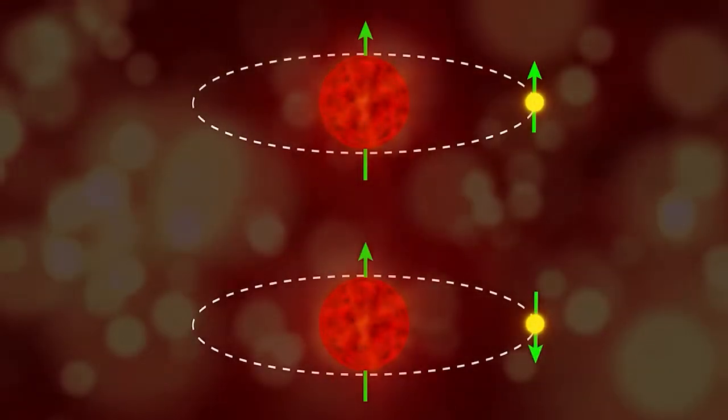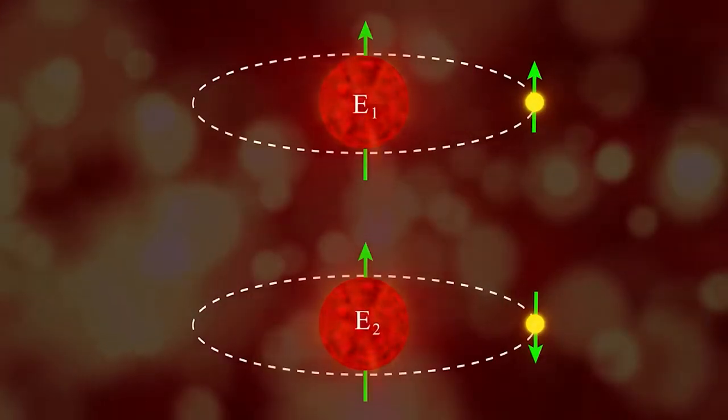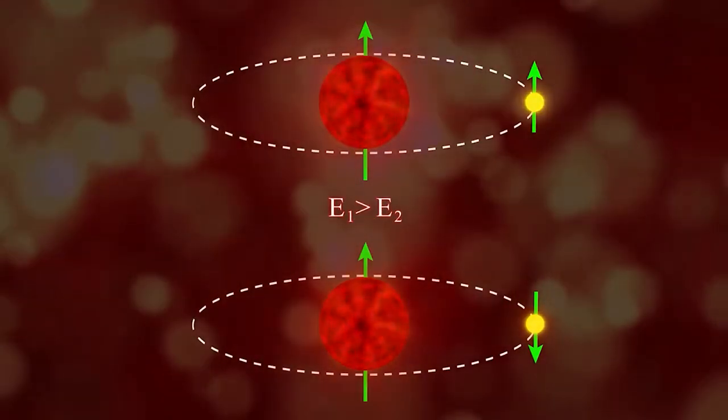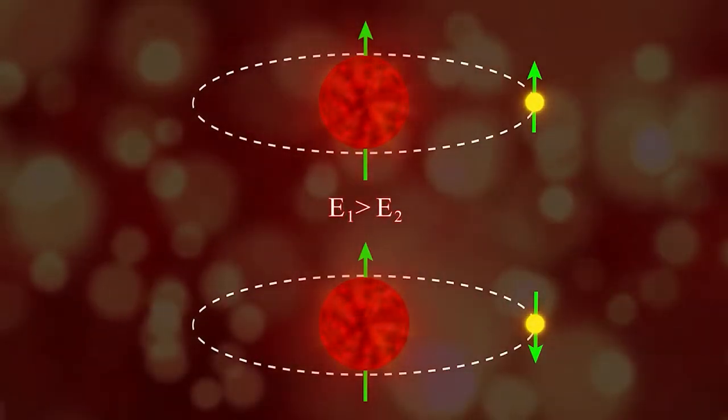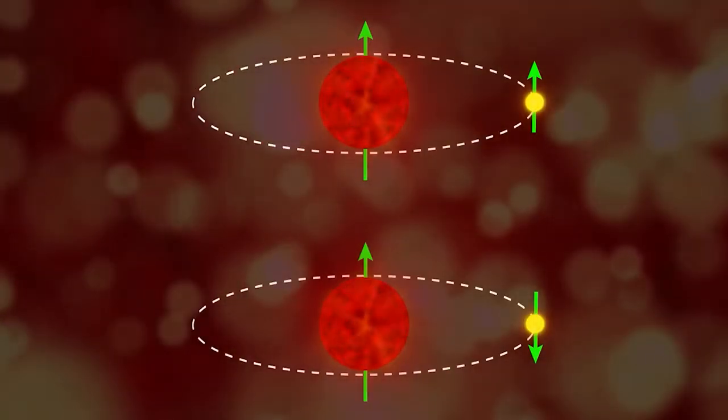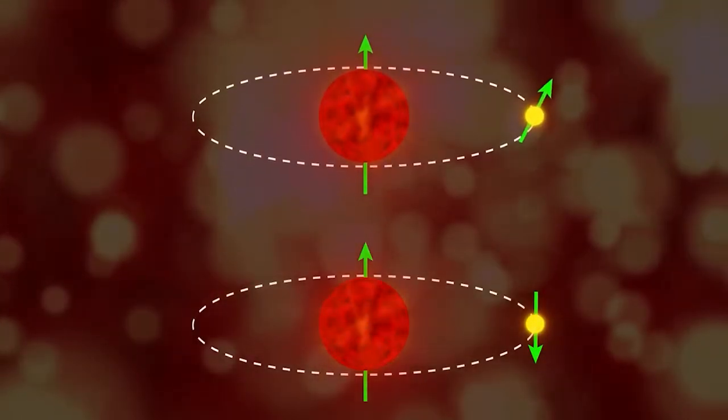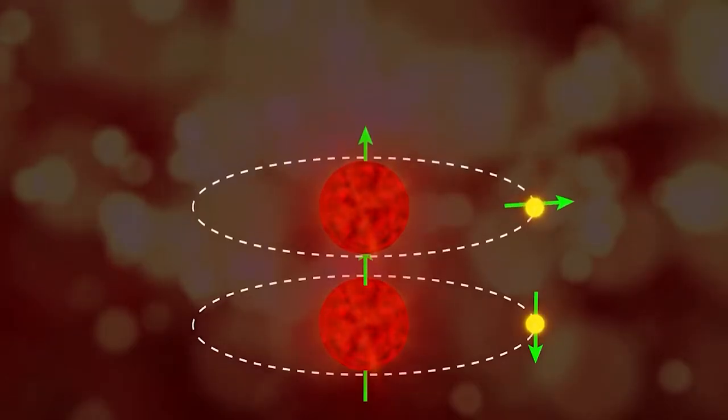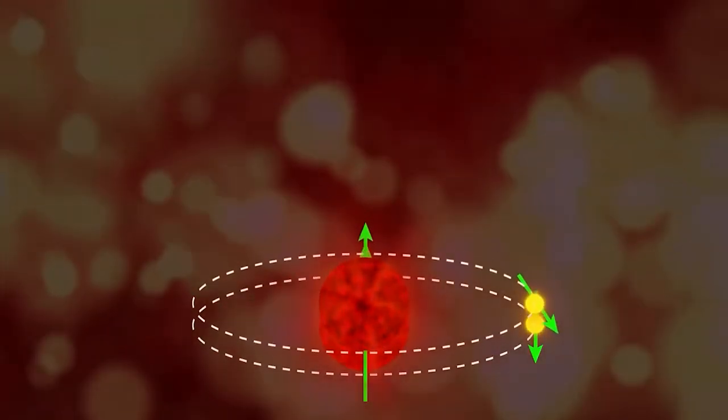Interestingly, it turns out that when their spins are aligned, the atom's energy is slightly higher than when they are anti-aligned. Consequently, an energy transition can occur from a higher energy state with parallel spins to a lower energy state with anti-parallel spins.